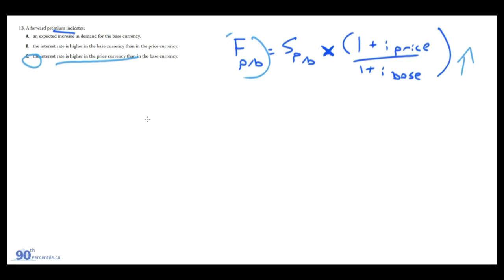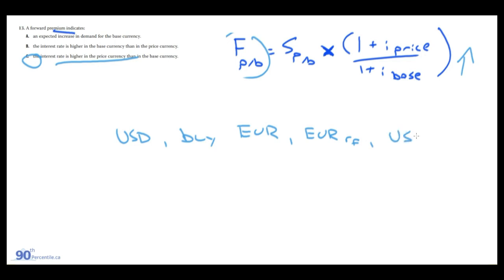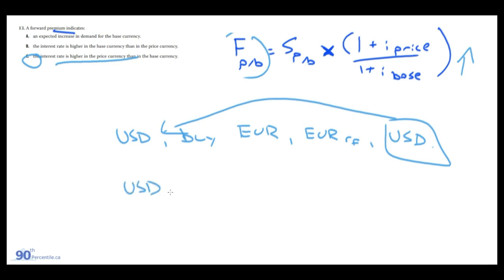A quick tangent: this is a no-arbitrage condition because the theory holds that investing at the risk-free rate in two different currencies — even after FX conversions — should yield the same result. For example, a US company buying euros, investing at the euro risk-free rate, then converting back to USD should equal simply investing at the USD risk-free rate. If this ever doesn't hold, large money managers will exploit it.